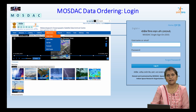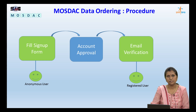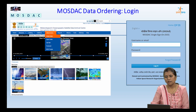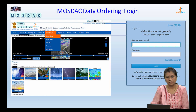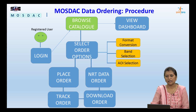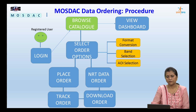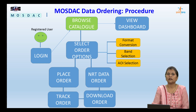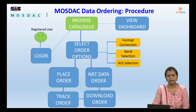A user must be a registered user of MOSDAC in order to place a data request. To register, the user fills up the sign-up form, then account approval is done. Once the user receives the email and completes the email verification process, the user becomes a registered user. Once a user has MOSDAC credentials, they can log in. The procedure is: browse the data catalog, select order options including format conversion, band selection, and area of interest, then place the order. Similar options are available for near real-time data ordering, also known as standing orders. Once a request is placed, the user can track its status and download the data.